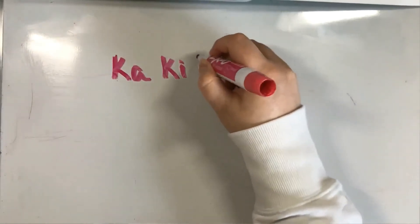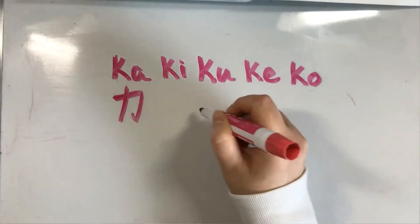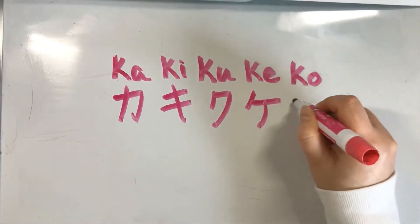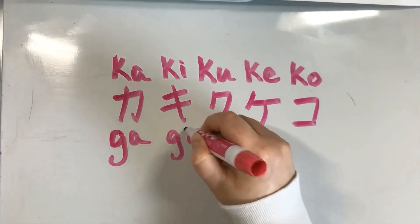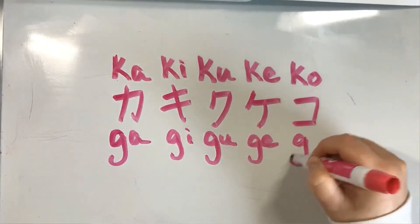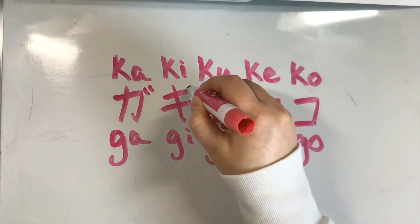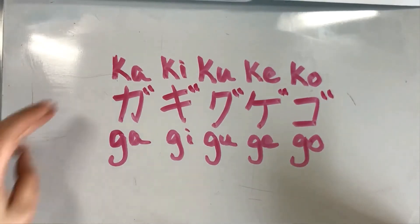So we're going to be doing the same kind of idea but with the katakana characters. Let's review the ka characters in katakana: ka, ki, ku, ke, and ko. Now we're going to change them to ga, gi, gu, ge, go by adding quote marks to the side — the same as we did in hiragana. So we've changed it from ka to ga.